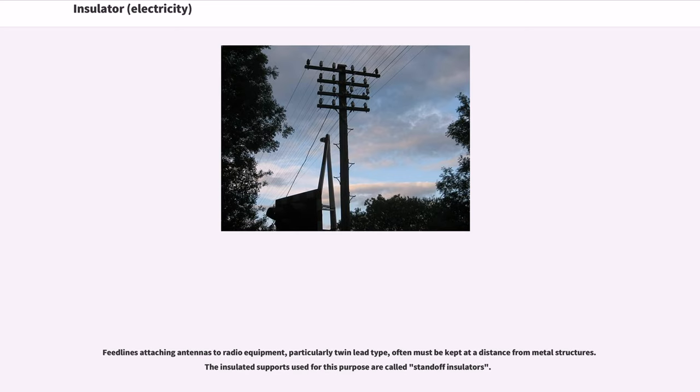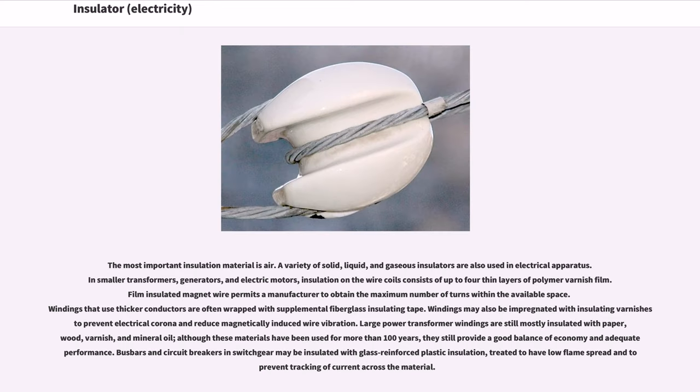Feed lines attaching antennas to radio equipment, particularly twin-lead type, often must be kept at a distance from metal structures. The insulated supports used for this purpose are called standoff insulators. The most important insulation material is air.